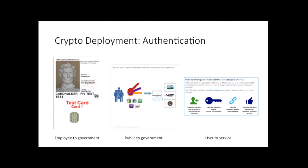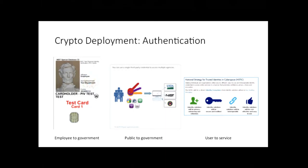The second case is the public authenticating to government sites. There's an existing initiative called connect.gov where users can get credentials from private sector credential providers and use those to authenticate to connect.gov, which provides a single sign-on across some federal sites. The plan is to build this out with more approved credential sources and more government websites, so that when an American wants to engage in repeated interactions with a government site, we have a better way of authenticating them.